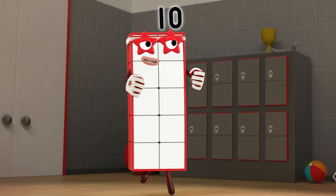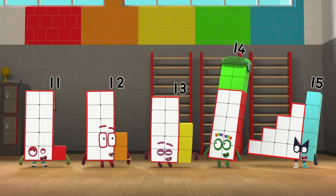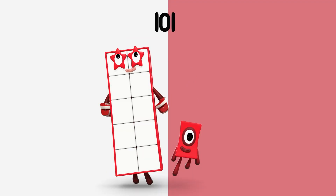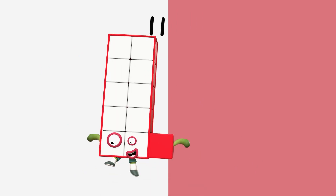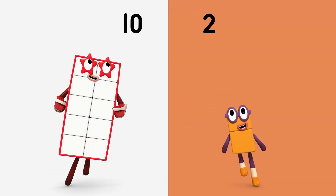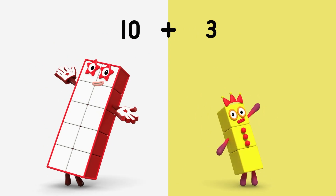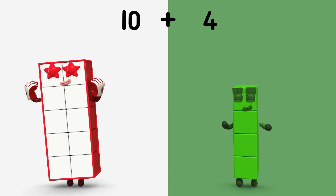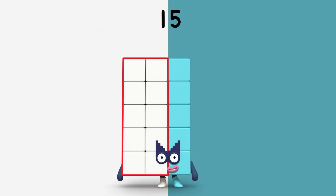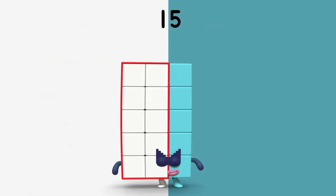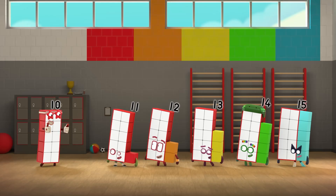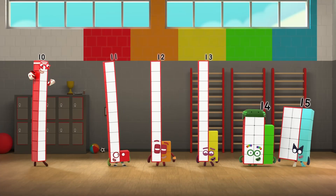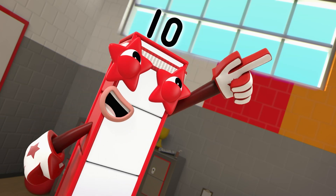That's right. Now give me some squats. Let me see you do the jump and bump. Ten plus one is eleven. Ten plus two is twelve. Ten plus three is thirteen. Ten plus four is fourteen. Ten plus five is fifteen. Terrific. Now let's stretch our tens — nice and tall.